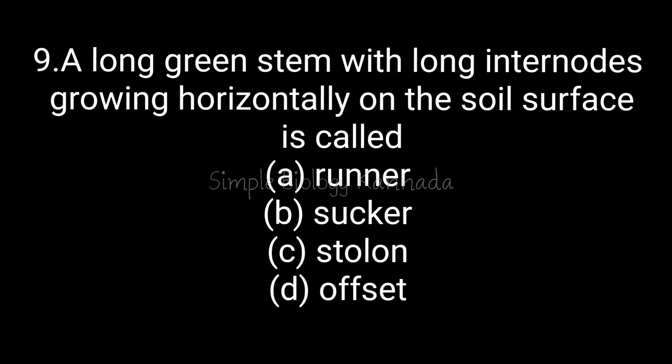Next question: a long green stem with long internodes growing horizontally on the soil surface is called — this falls under sub-aerial modification. Among runner, sucker, stolon, and offset, the key identifier is 'long internodes' — runner has long internodes, while offset has short internodes. So the answer is option A: runner.